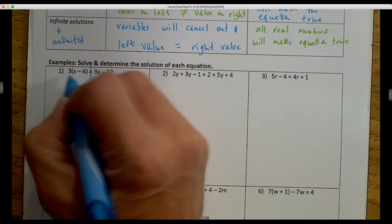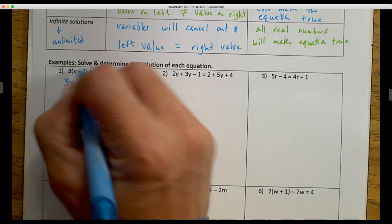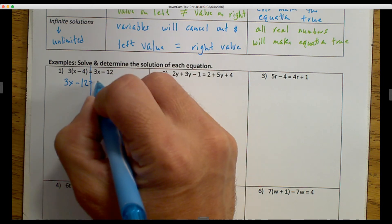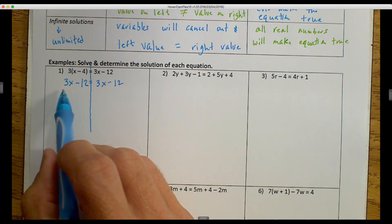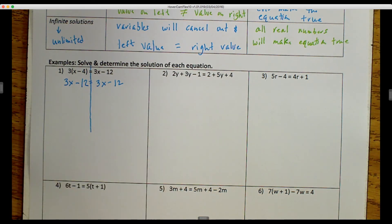So I'm going to distribute the three, and I'm going to go 3x, and then three times negative four would be minus 12, is equal to 3x minus 12. And if I see this right now, I could notice that 3x minus 12 is the same as 3x minus 12, so they're equal to each other.